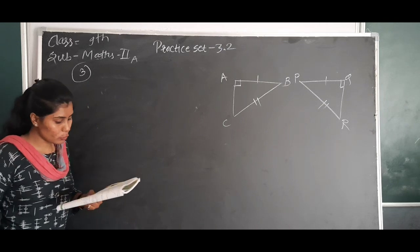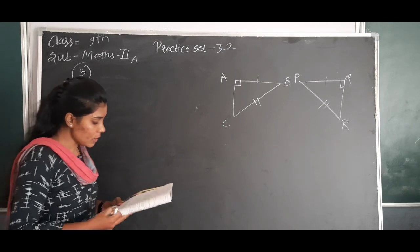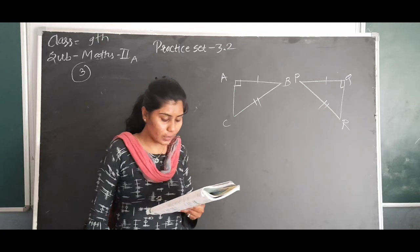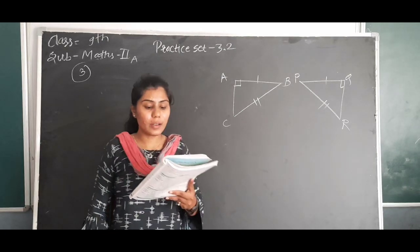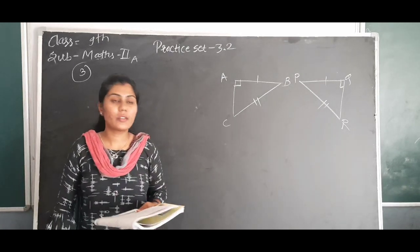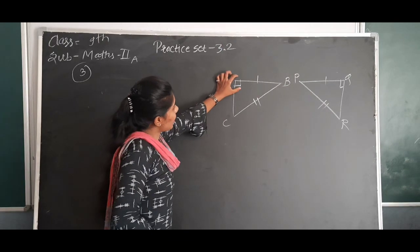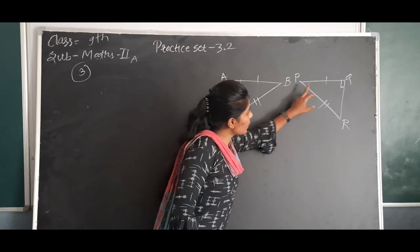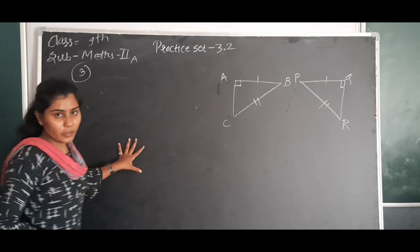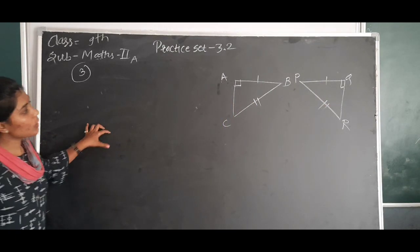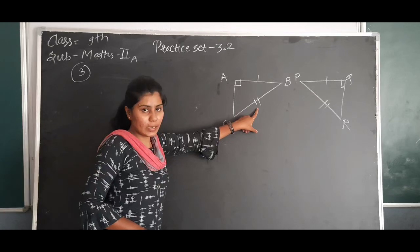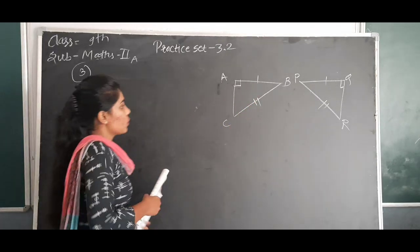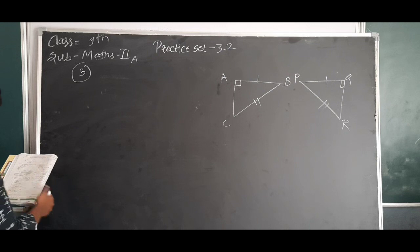From the information shown in the figure, state the test assuring congruence of triangle ABC and triangle PQR, and write the remaining congruent parts. It is a right angle triangle — angle ABC is a right angle, and PQR is also a right angle triangle. So the applicable test is one side and hypotenuse, that is the Hypotenuse-Side test.